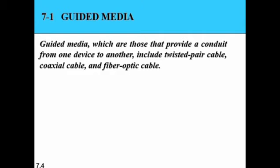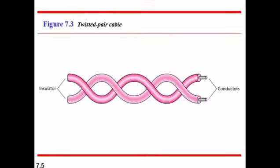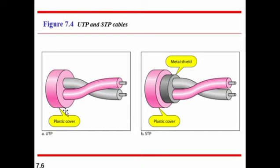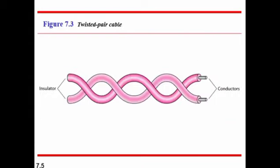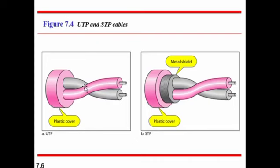The first one is the twisted pair cable. Looking at the internal structure, the outer layer is the insulator and inside that is the conductor — the wire. There are two types of twisted pair cable: unshielded twisted pair (UTP) and shielded twisted pair (STP). In the unshielded twisted pair cable, there is only a plastic cover over the conductors and insulators. In the shielded twisted pair cable, there is a metal shield over the insulator and conductor, and then the plastic cover over it. This metal shield is not present in the unshielded twisted pair cable.